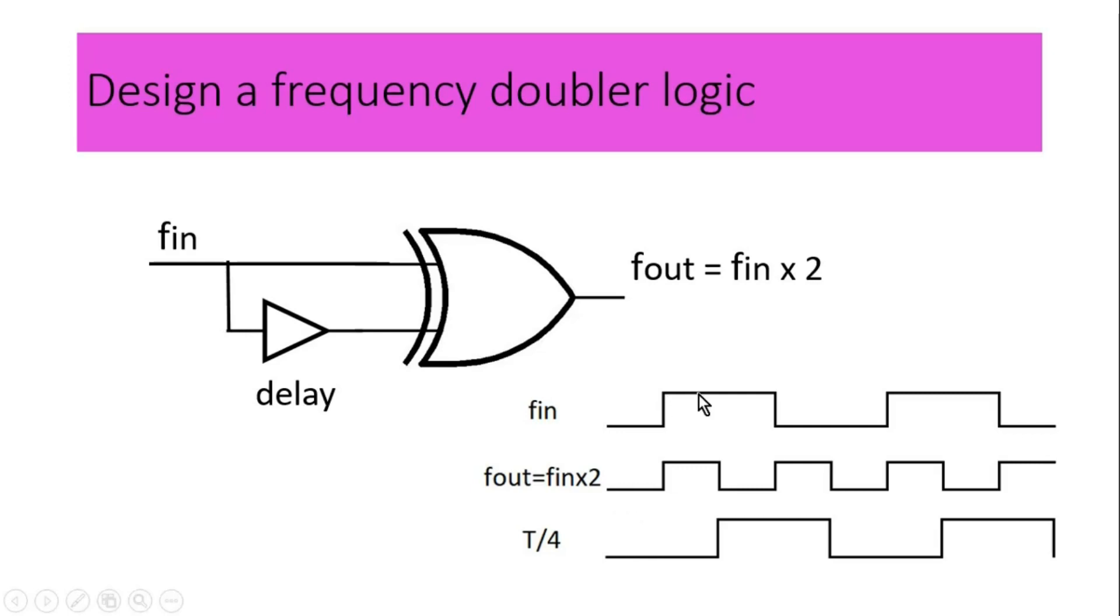If f_in is 1, T/4 is 0, we should get 1. If f_in is 1, T/4 is 1, both are same. So as per XOR gate, we should get 0. If f_in is 0, T/4 is 1, we should get 1. If f_in is 0, T/4 is 0, as per XOR output should be 0. So that means we are getting f_out as per our expectation.